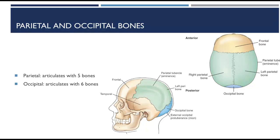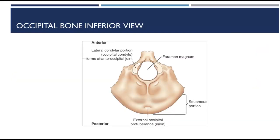The occipital bone is the most inferior posterior portion of the calvarium. The external surface presents a rounded part called the squamous portion. The inion is a prominent bump at the inferior portion of the skull that you can feel. The foramen magnum is a large opening at the base of the occipital bone through which the spinal cord passes. The condylar portions are oval processes with convex surfaces on each side of the foramen magnum, which articulate with the atlas to create the atlanto-occipital joint — the two-point articulation between the skull and the cervical spine.